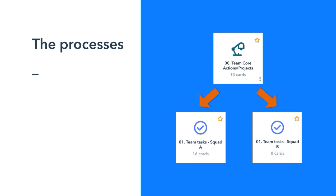The structure we're going to present in the practical part today is fairly simple — structured into two levels. We have a main pipe where our macro tasks are managed to make it easier for managers to keep track of what their teams are working on. Then we have two secondary pipes where the smaller tasks are created and delegated to squad members. The form in the main pipe has field conditionals for filling different fields when creating core actions or projects.